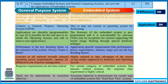Coming to the first question, 7a: compare embedded system and general computing systems and also provide the applications of embedded system. You can see here, I have given the clear differences between these two. There are six to seven differences here. You can write only four differences to get three to four marks, and they have also asked to write the applications of embedded system in the question.